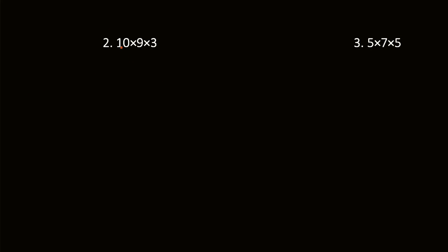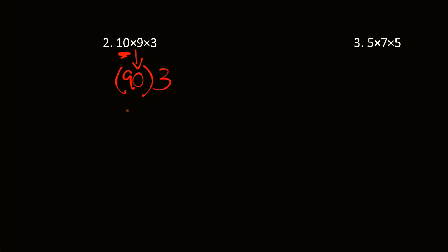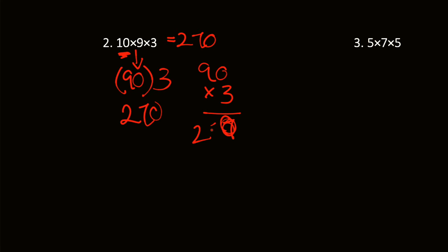Next up we have 10 times 9 times 3. We can do this a couple of different ways. Whenever you multiply a number by 10, you get the number with a 0. I'm going to do 9 times 10, which is 90. Then 90 times 3 is equal to 270. You can do 90 times 3 — that's 0, then 27, so 270. Or you could just do 9 times 3, which is 27, and add the 0 at the end. So 10 times 9 times 3 is equal to 270.